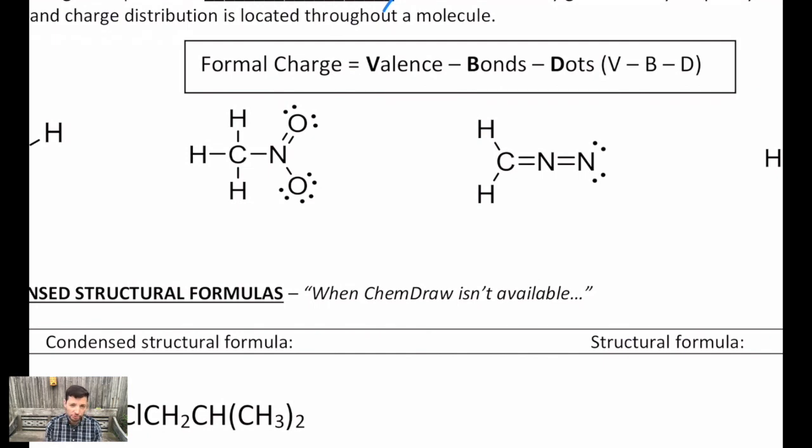The formula for a formal charge is based on comparing how many valence electrons an atom has, compared to how many it looks like it's having in the bonded structure. Mathematically, it's the valence of that atom minus how many bonds it's making, minus how many unshared pairs of electrons or dots, just electrons themselves individually. So VBD, valence minus bonds minus dots.